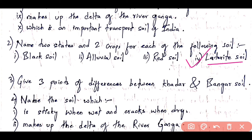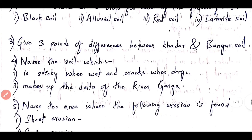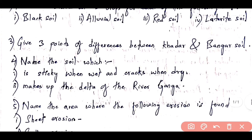For laterite soil, you can write tea, coffee, rubber, and cashew as crops, and the two states are Andhra Pradesh and Tamil Nadu. Those are the states you can mention for laterite soil.